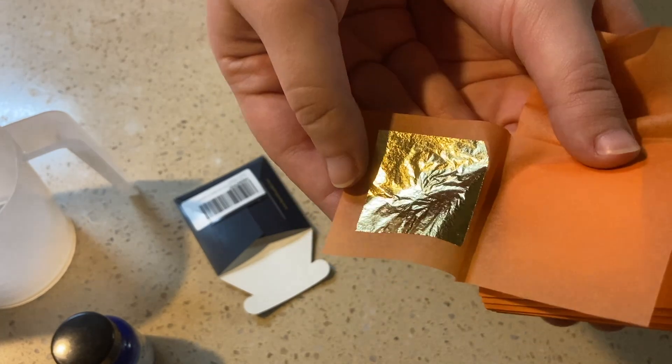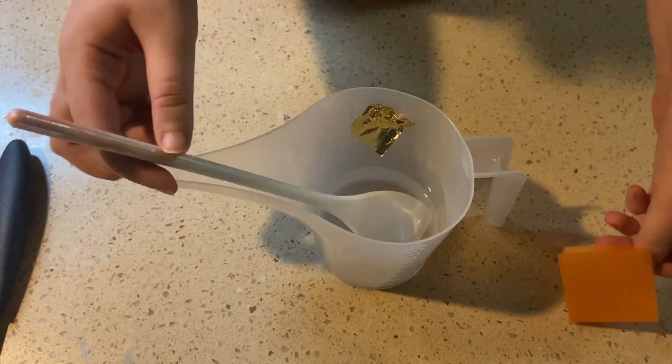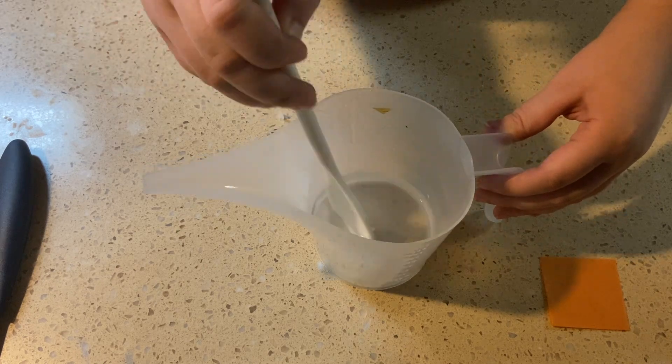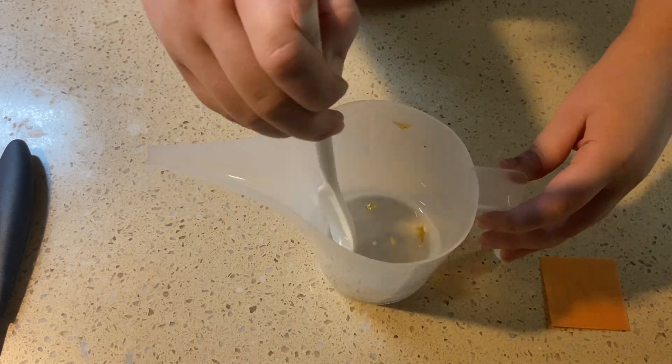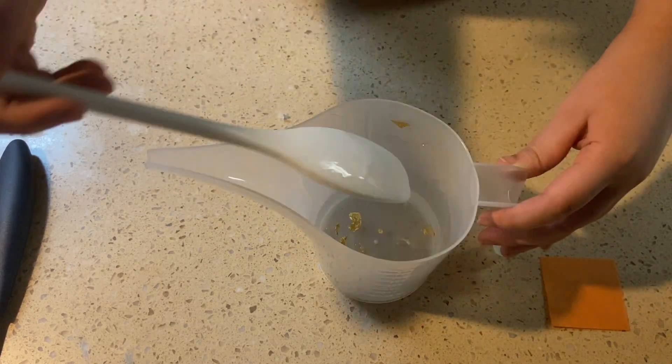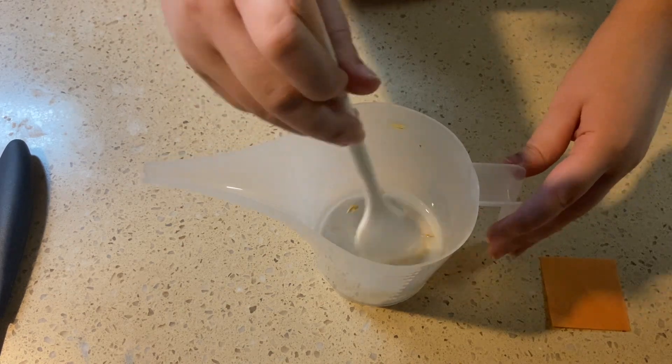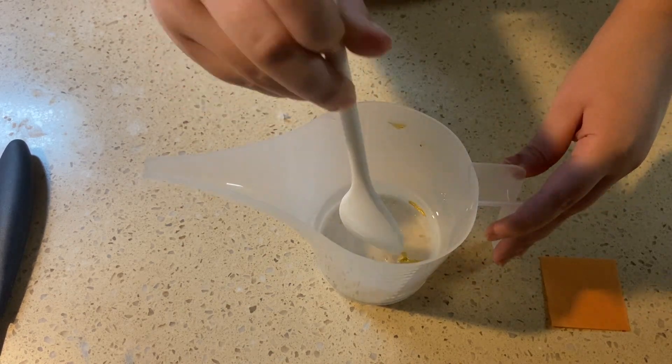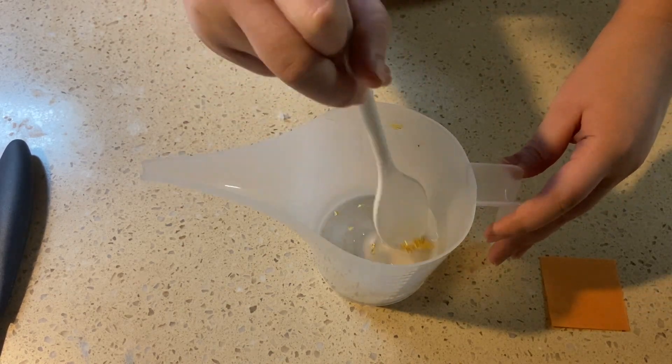Gold leaf sticks to basically the first thing it touches so be really careful if you're trying this at home. Make sure to turn off any fans that may be blowing around, as the gold leaf is really delicate and can blow away.